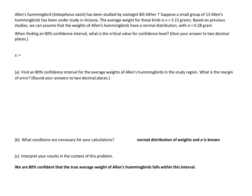Let's do an example. Allen's Hummingbird has been studied by zoologist Bill Author. A small group of 13 Allen's Hummingbirds has been under study in Arizona. The average weight is x-bar equals 3.15 grams. Based on previous studies, we can assume the weights have a normal distribution with population standard deviation of 0.28 gram. When finding an 80% confidence interval, what is the critical value? From the chart on the first slide, that was 1.28.